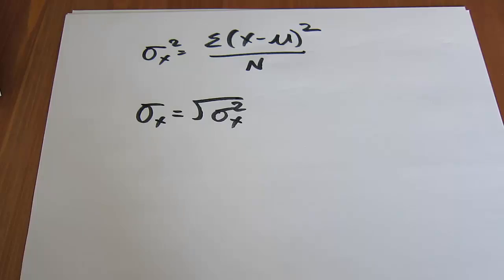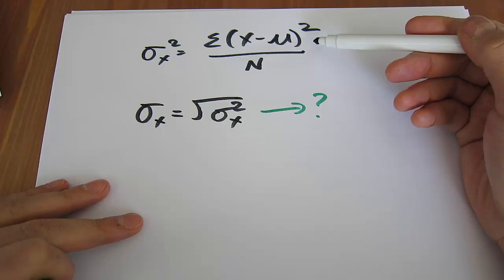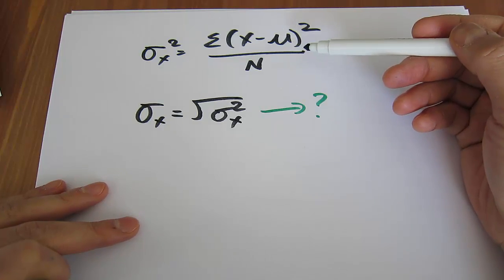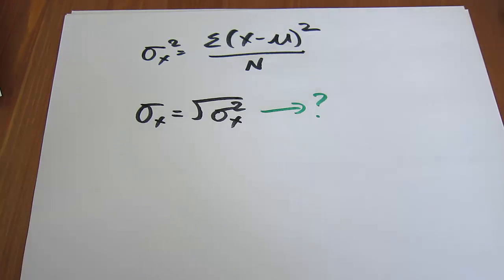Now, is it just me, or does it seem like a waste of time? Why are we calculating something called the variance to measure spread, then take the square root of it and call it the standard deviation, which also measures spread? Why are we just taking the square root? What's the purpose of that?